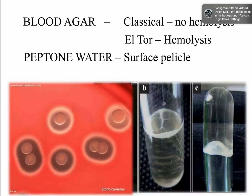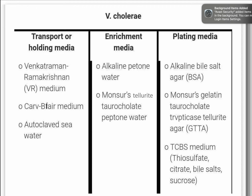On blood agar, the classic strain does not cause hemolysis, but the El Tor strain produces hemolysis. In peptone water, a surface pellicle forms. Common transport media include the Venkatraman Ramakrishnan medium (VR medium) and Kariblair medium, which maintain a high pH. If no transport medium is available, blotting stool samples onto thick blotting paper is a practical alternative.